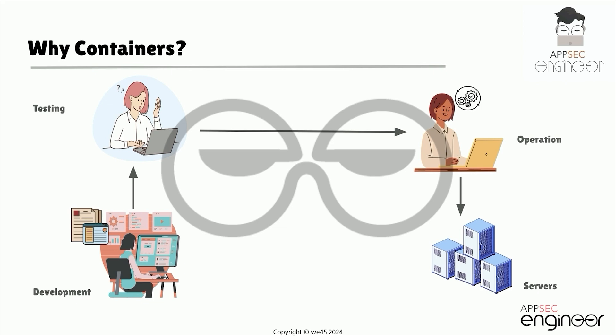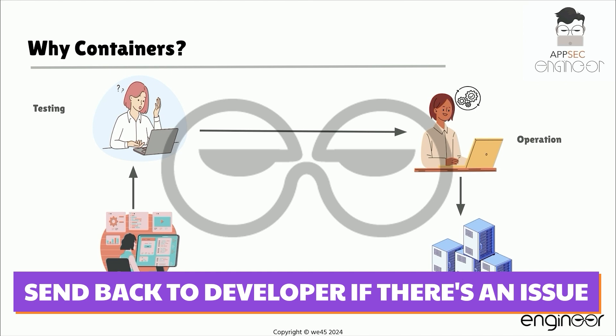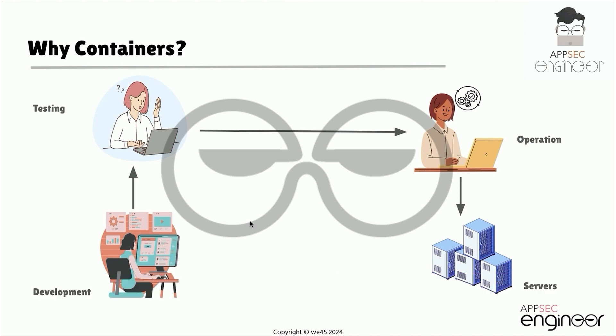Let's consider a web application. The development team builds the software, gets it ready, and pushes it to the testing team. The testers look at the application; if there are issues, they send it back to the development team. If everything looks good, it is pushed to the operations team, who then push it to the servers so it can run in the production environment. This is the cycle most software companies follow: development, then testing, then operations.